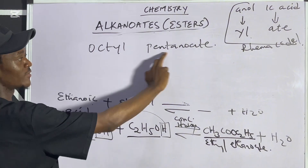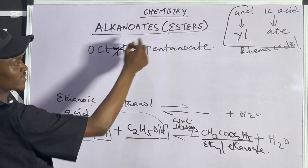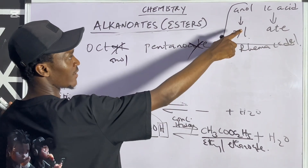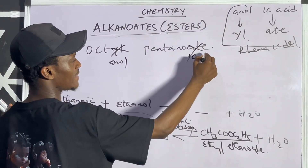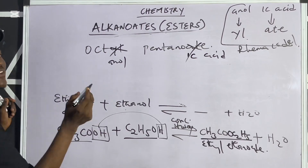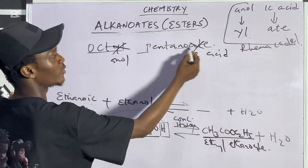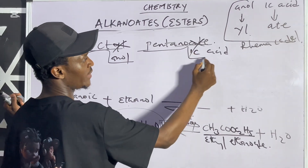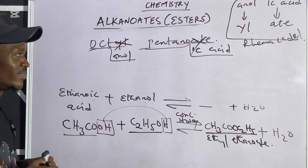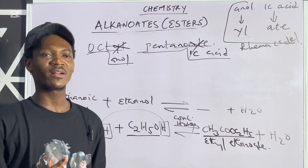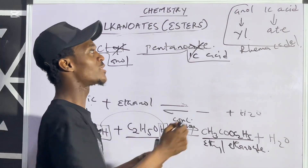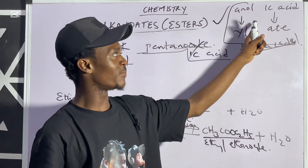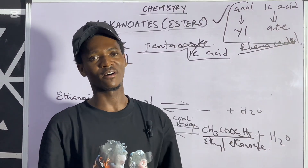So the hydrolysis of octyl pentanoate yields octanol and pentanoic acid. Always remember the Rama Code: '-anol' is to '-yl' as '-ic acid' is to '-ate.' That's how you go about attempting questions like this.